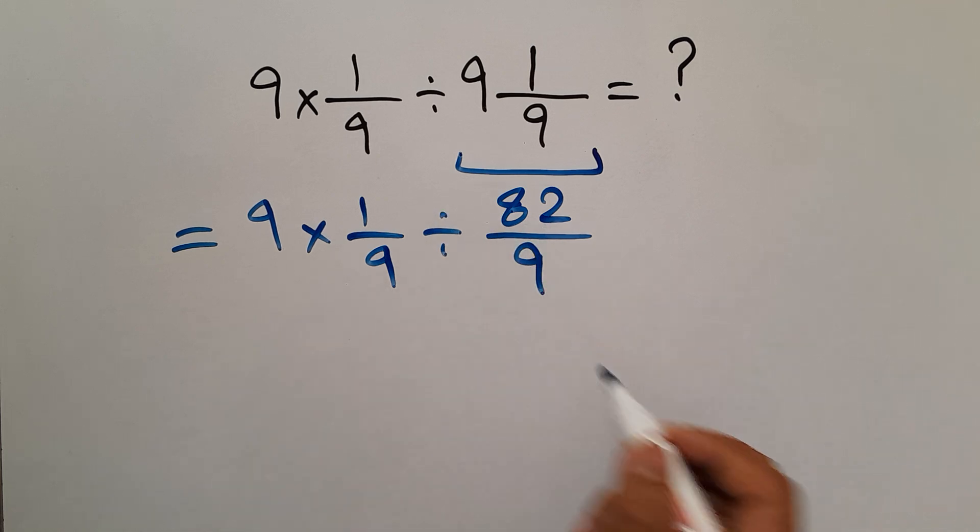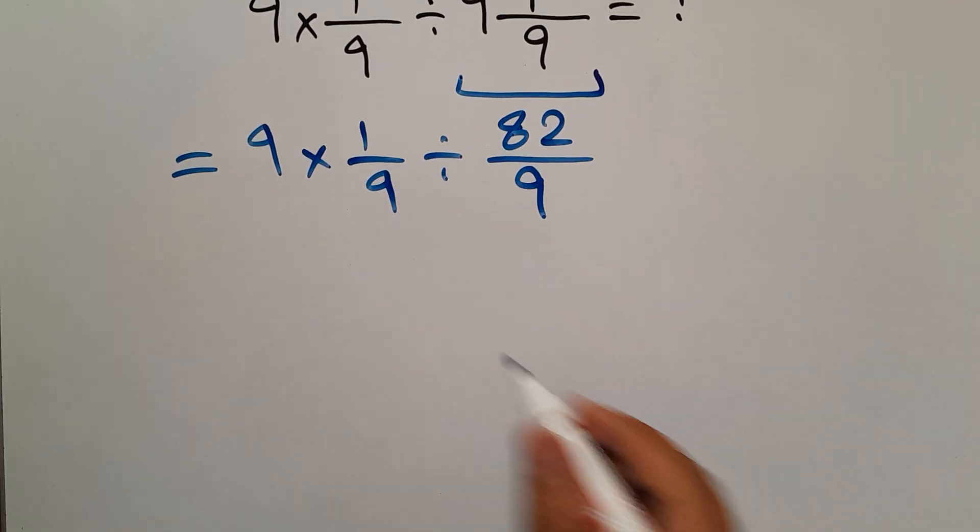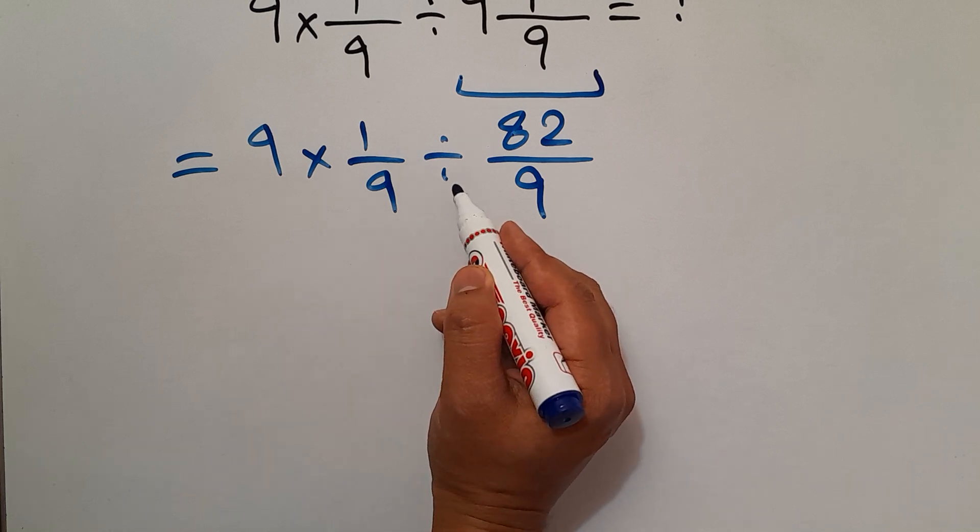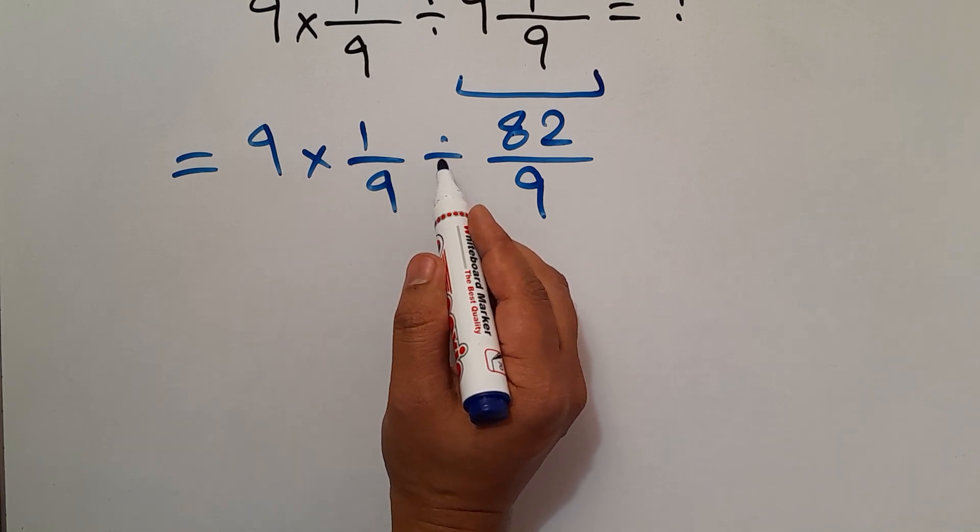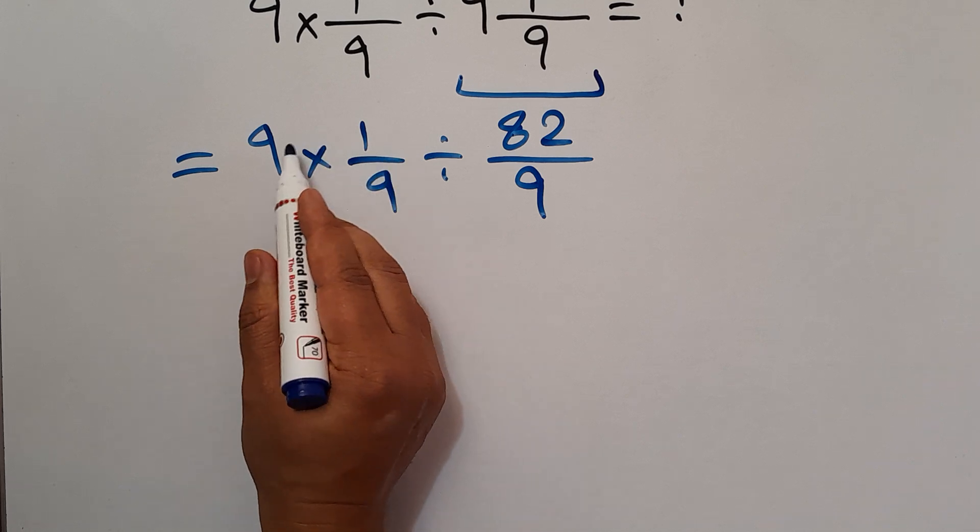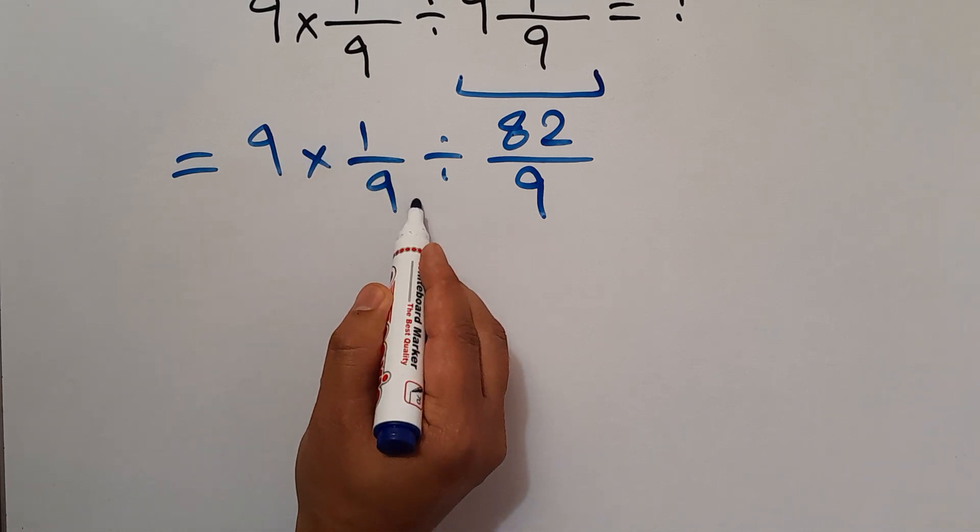In this expression we have one multiplication and one division. As we know, multiplication and division have equal priority, and we have to work from left to right. So first, this multiplication: 9 × 1/9. We can easily cancel this 9 and this 9, so we have just 1.